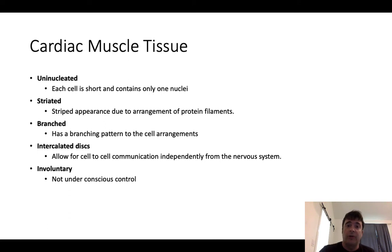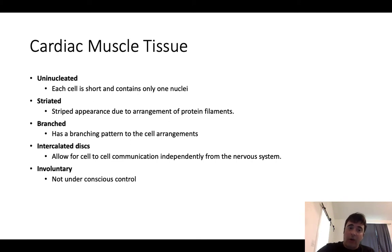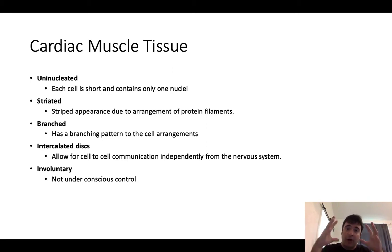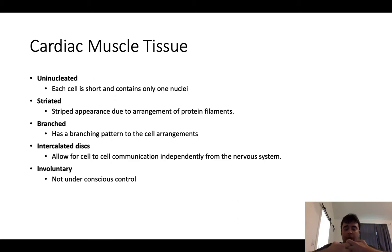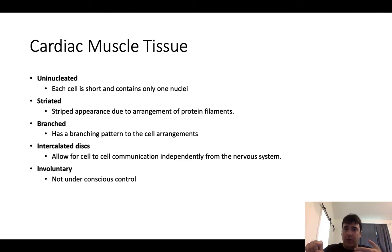Cardiac muscle tissue is a little bit different. Each cell is uninucleated — you have short cylindrical cells that branch, with one nucleus for the most part. They're striated and take on a striped appearance. Cardiac muscle tissue branches, which allows it to generate contractile force in multiple directions, enabling it to squeeze on chambers. Each cardiac muscle cell is connected to its neighbor via intercalated discs — junctions with both desmosomes and gap junctions. Desmosomes provide a strong connection so cells don't rip apart, and gap junctions allow one cardiac muscle cell to communicate with its neighbor.